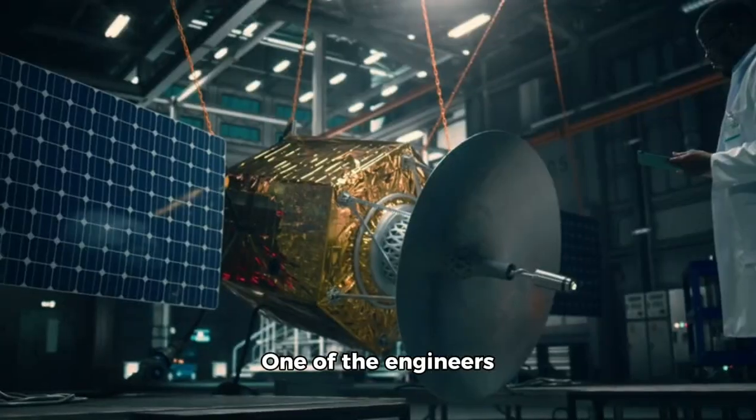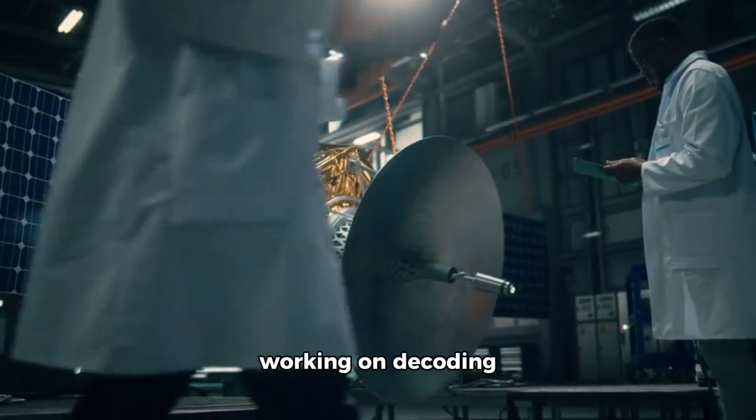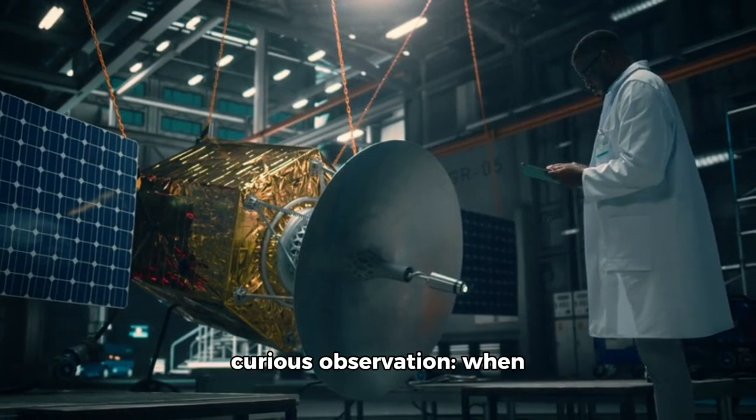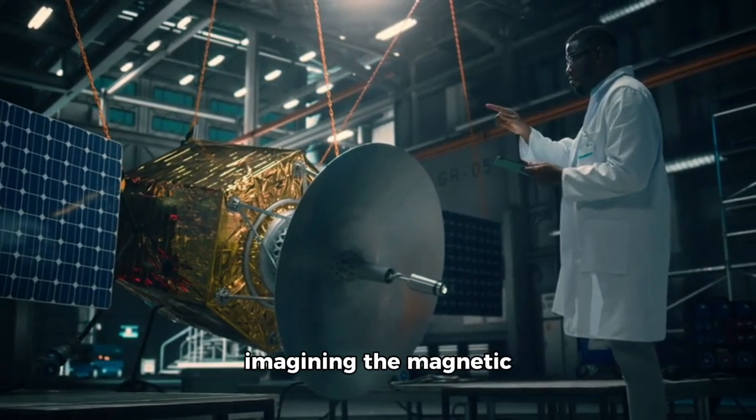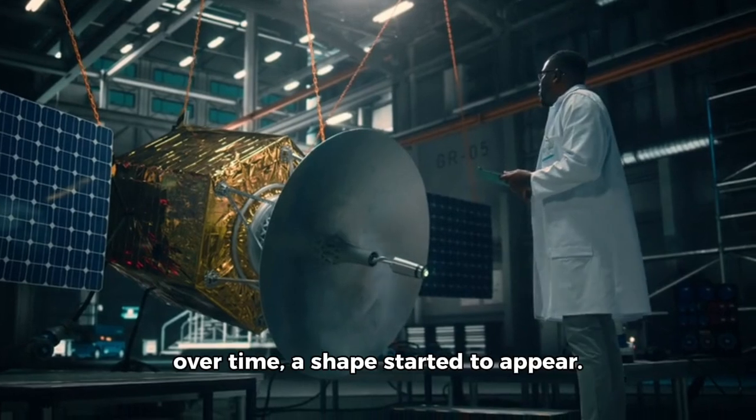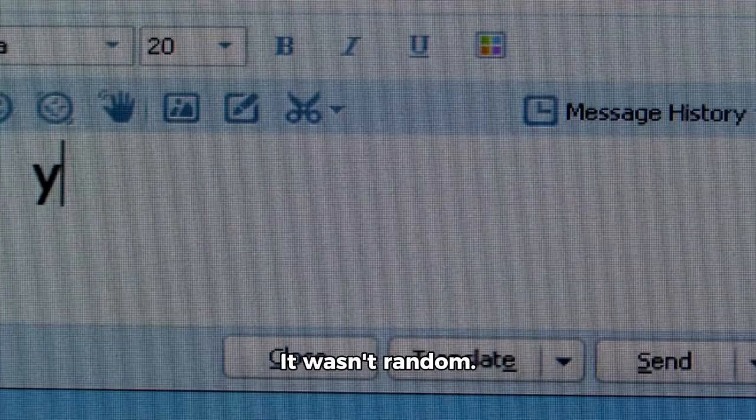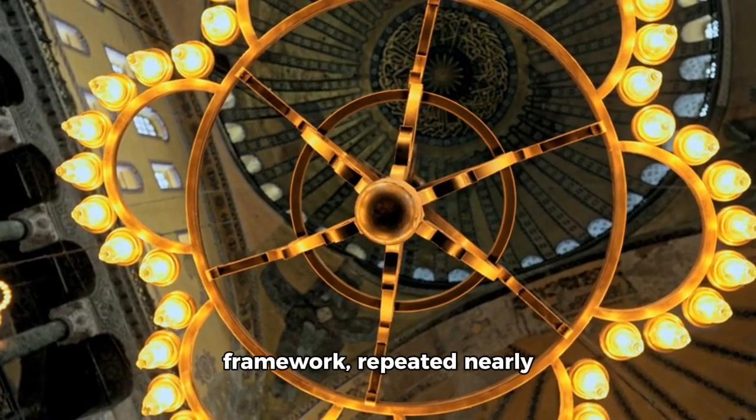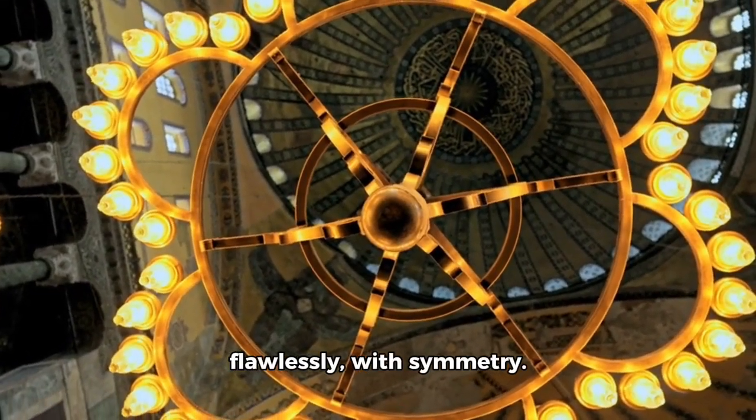One of the engineers working on decoding Voyager's latest transmissions made a curious observation when imagining the magnetic field variations as a three-dimensional model over time, a shape started to appear. It wasn't random. There was no noise. It looked like a spiral framework, repeated nearly flawlessly with symmetry.